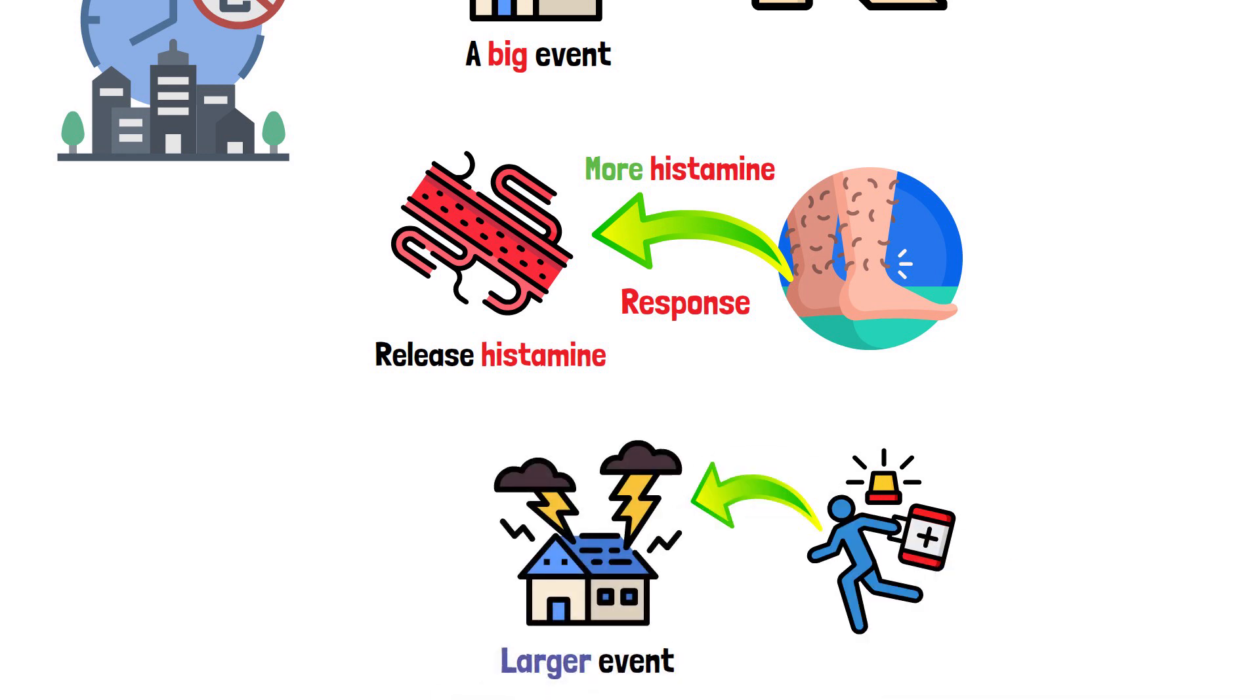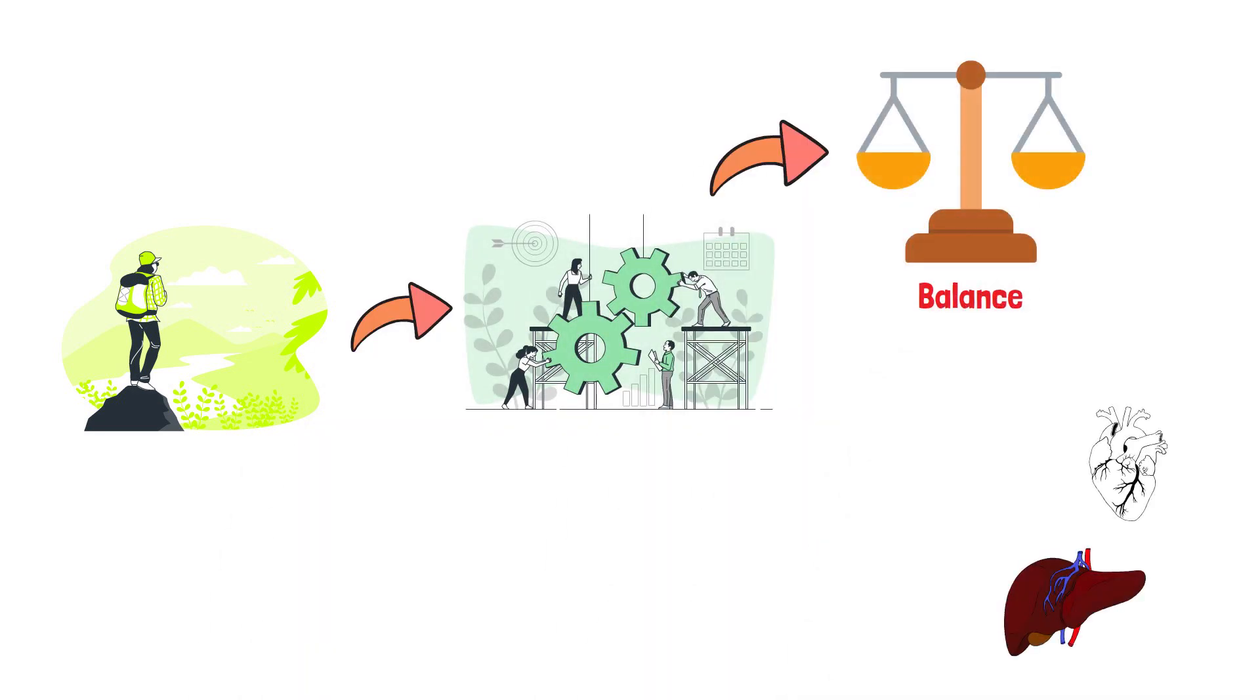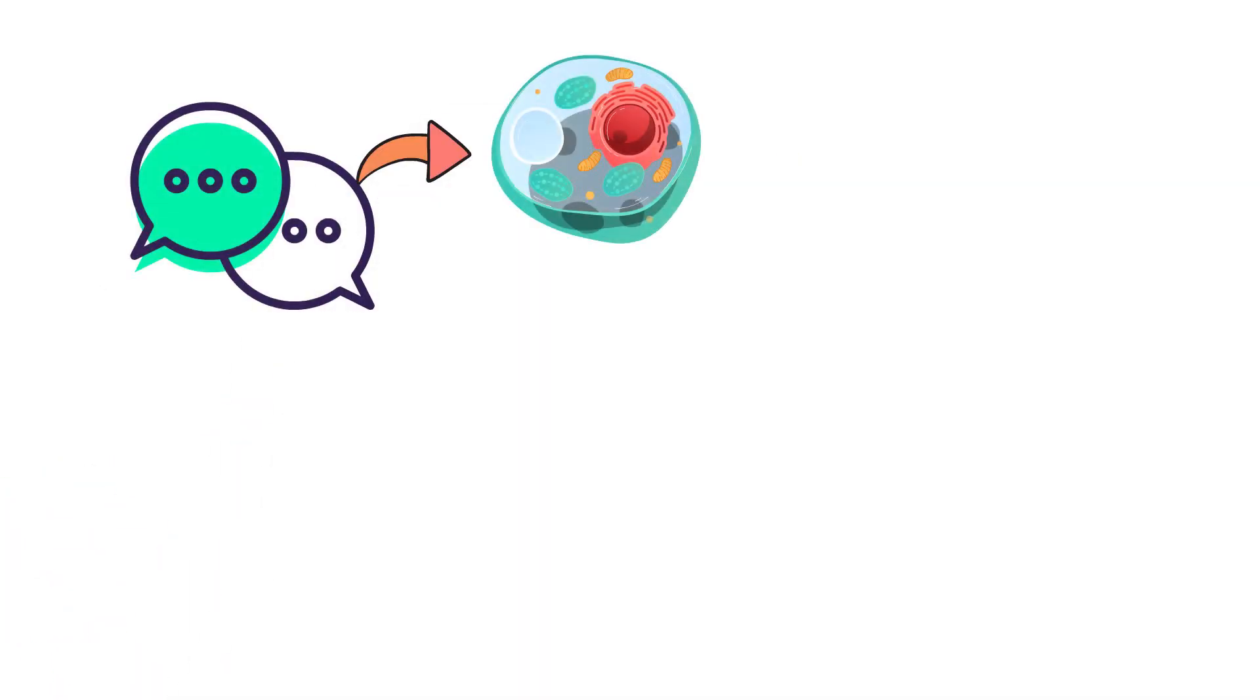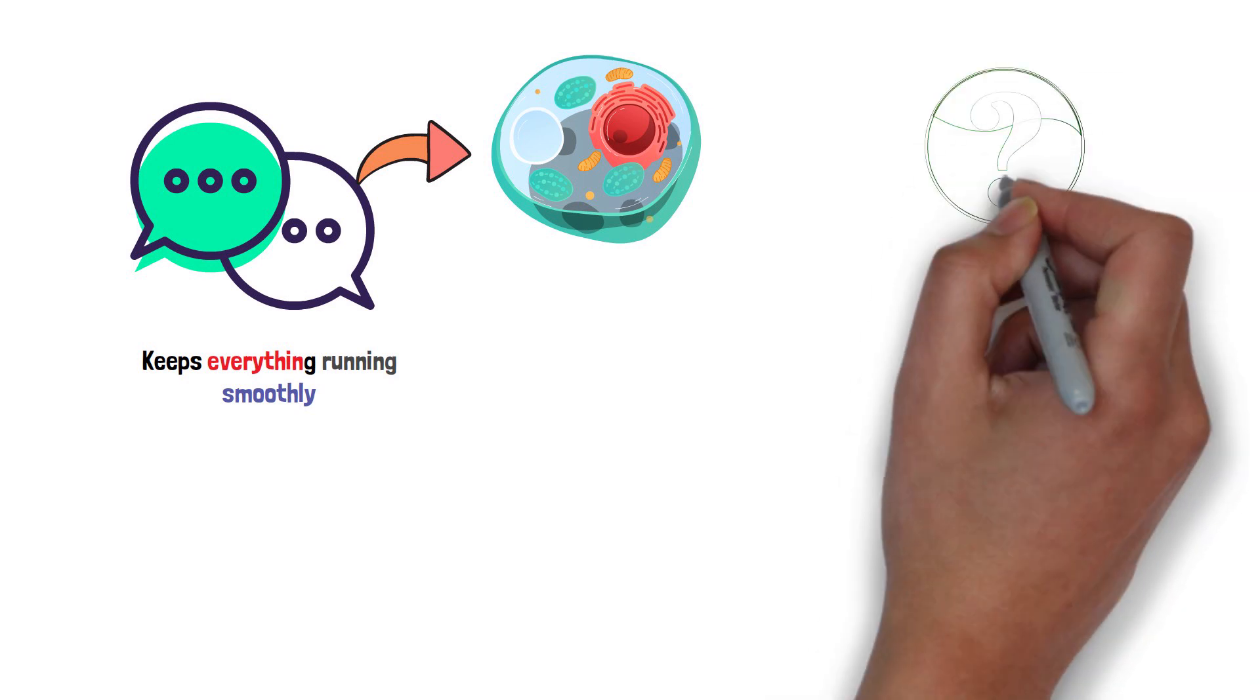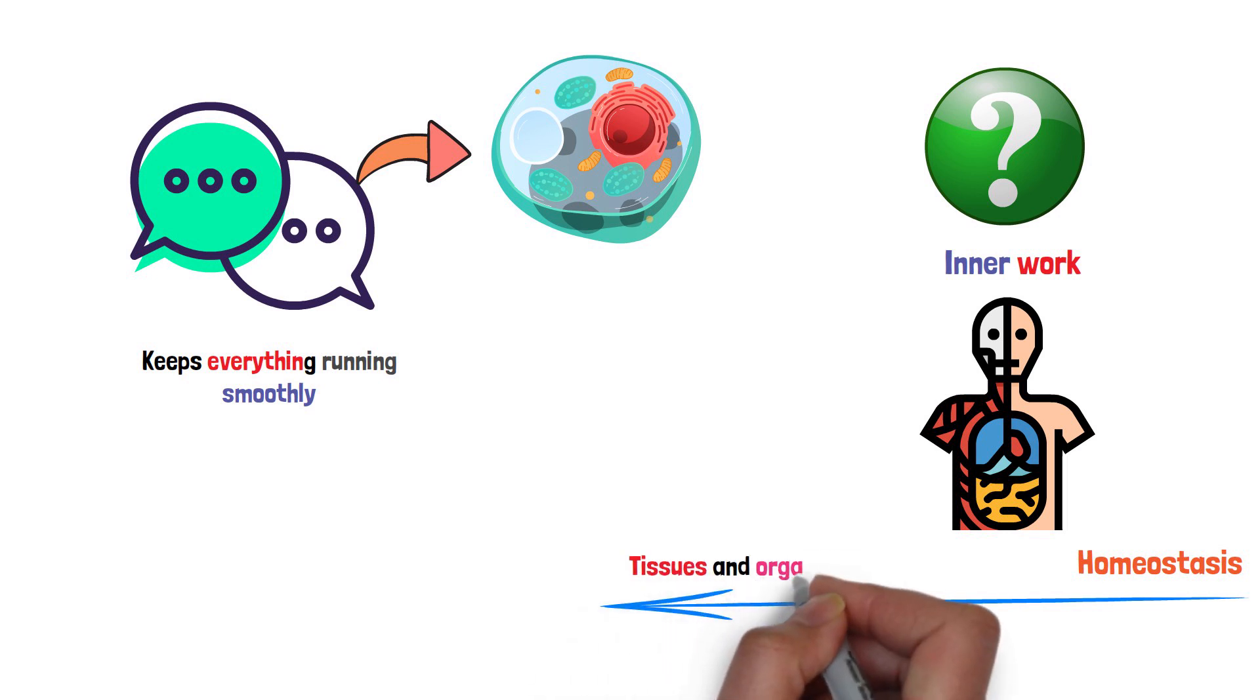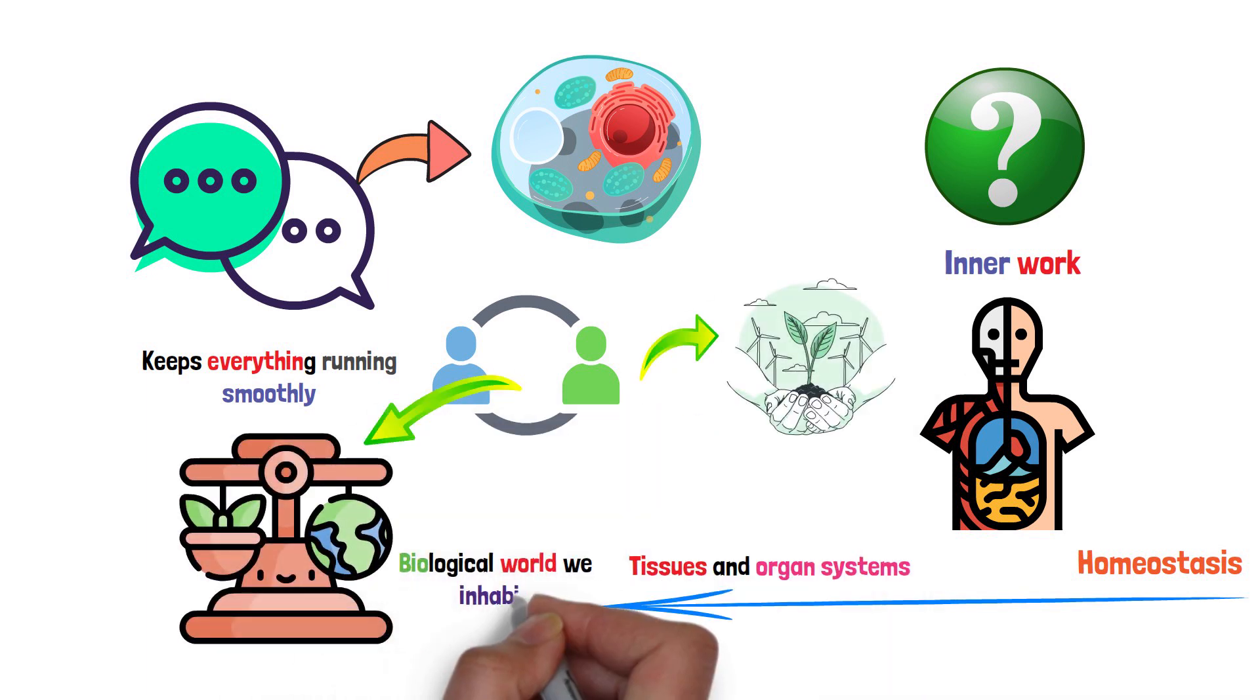So, through this journey, we've seen how the body works tirelessly to maintain balance, how its various components come together to form a functional whole, and how communication at the cellular level keeps everything running smoothly. Understanding the inner workings of our bodies, from homeostasis to the complex interplay of tissues and organ systems, is like peering into a microcosm of life, revealing the intricate balance and beauty of the biological world we inhabit.